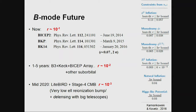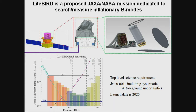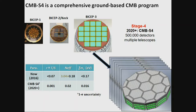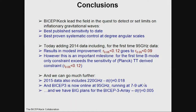LiteBIRD plans 15 frequency bands in space targeting one-sigma r of 10^-3 including all systematics and foreground uncertainties, aiming for 2025. CMB-S4 involves bigger telescopes mapping the lensing tail well with 500,000 detectors on the ground, also targeting mid-2020s. In addition to r, CMB-S4 will measure the effective number of relativistic species and the sum of neutrino masses to roughly 16 milli-eV.